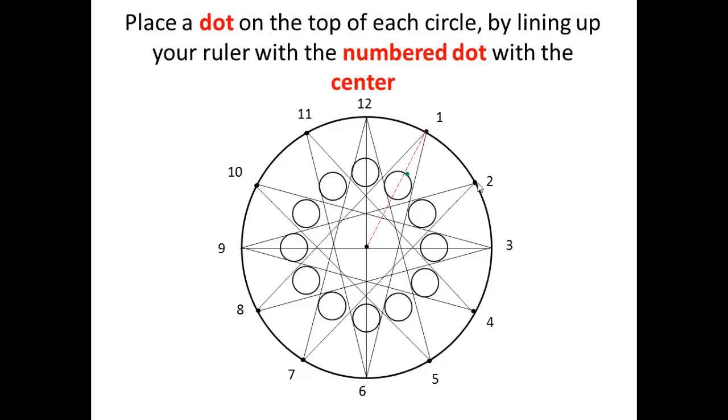Let's try another one. Take your ruler and line it up with dot 2 and the center. Now you take your pencil right here where the circle meets your ruler on the outer side. Put a dot in there. So go ahead and do that for the rest of the circles until you finish with circle number 12. So now you will have 12 dots on the outer edge of each circle.